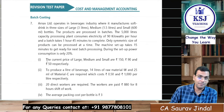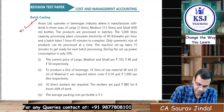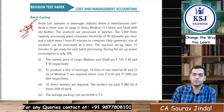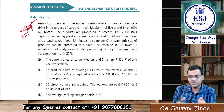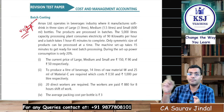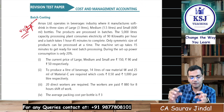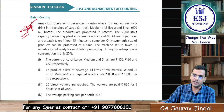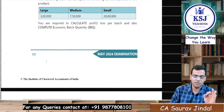Question 6 on cost accounting system is a reconciliation question — prepare financial books, costing books, and then reconciliation. Be very careful in writing figures; this type has been covered in ICI modules. Question 7 on batch costing is a very important and brilliant question. I will attach the video from my regular batch covering this question at the end of this video.